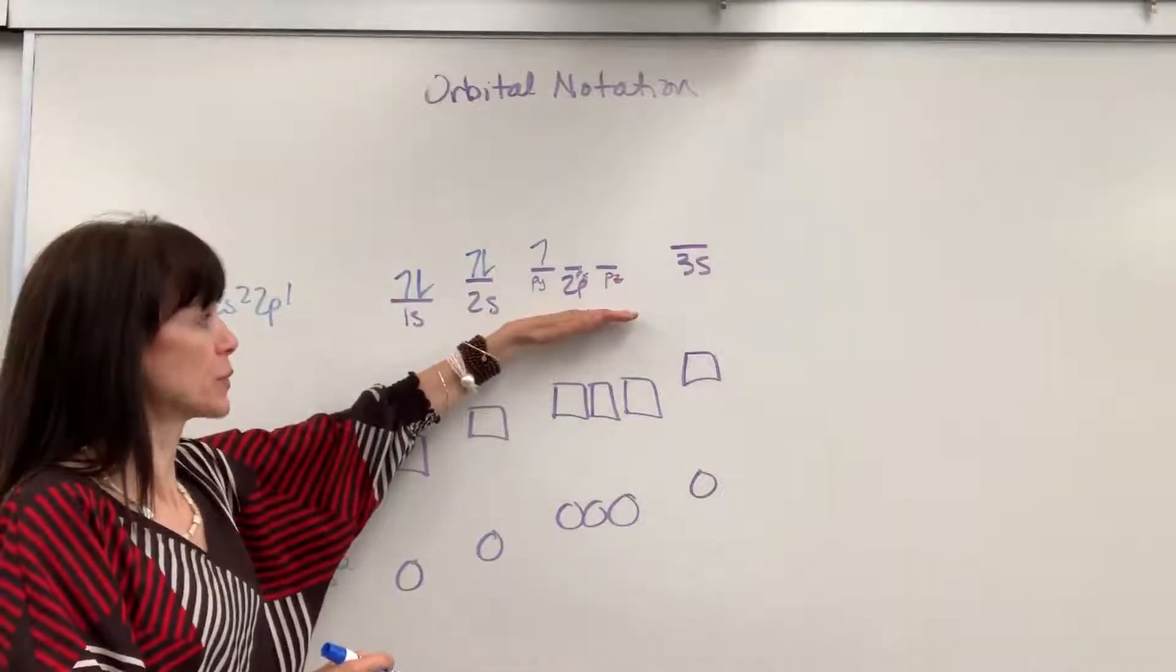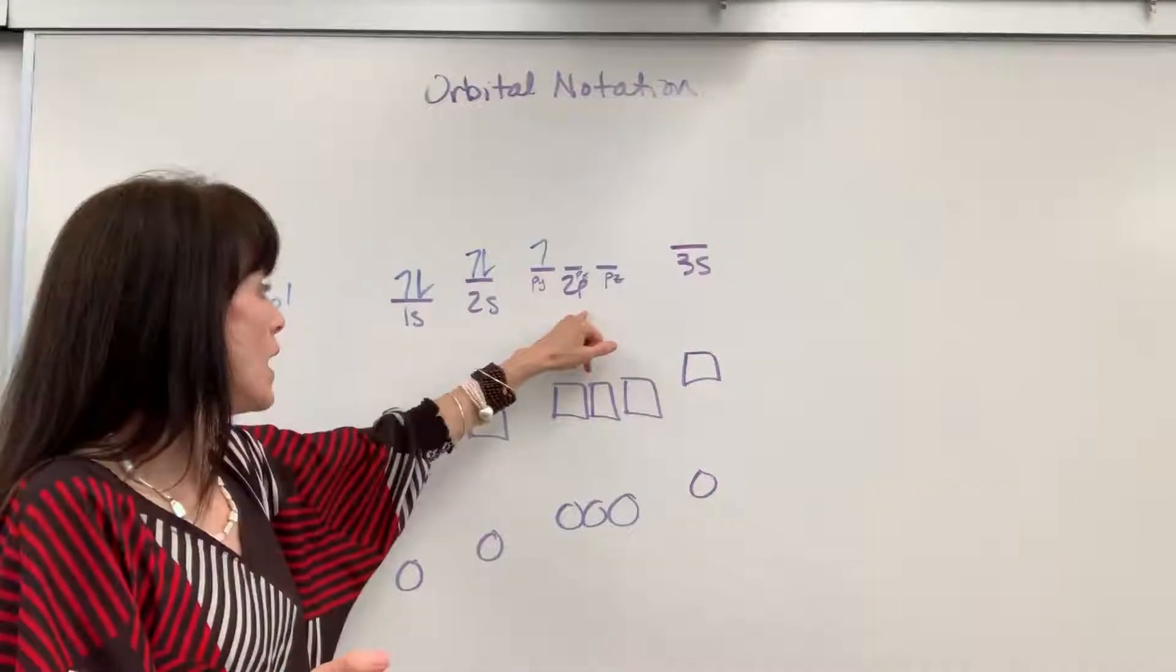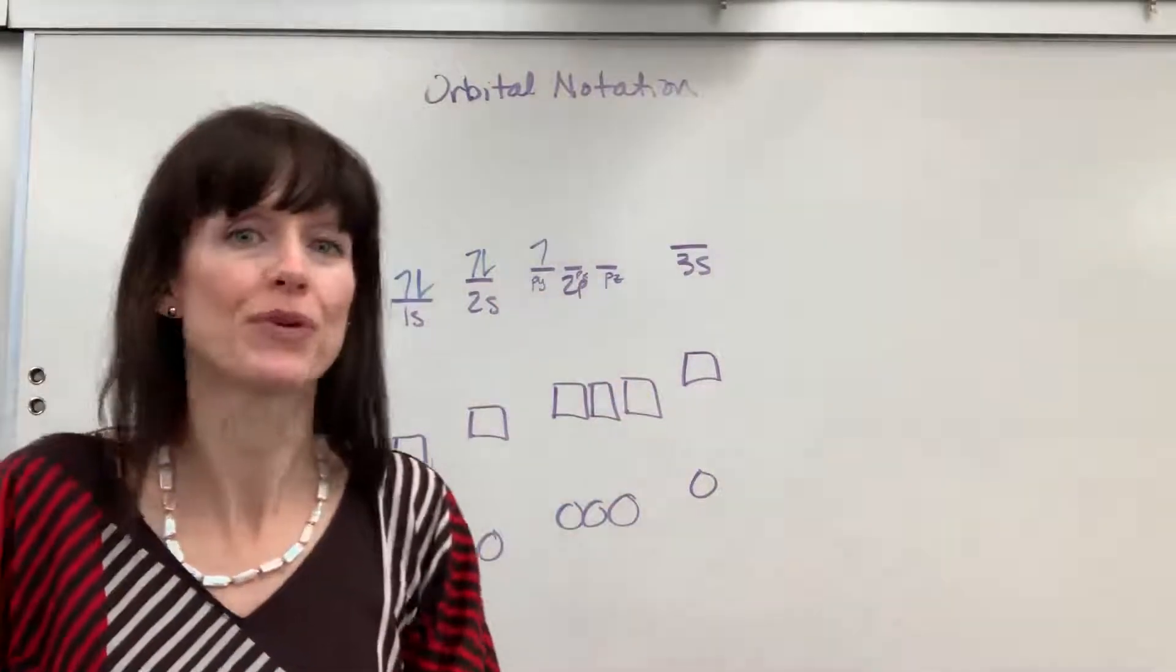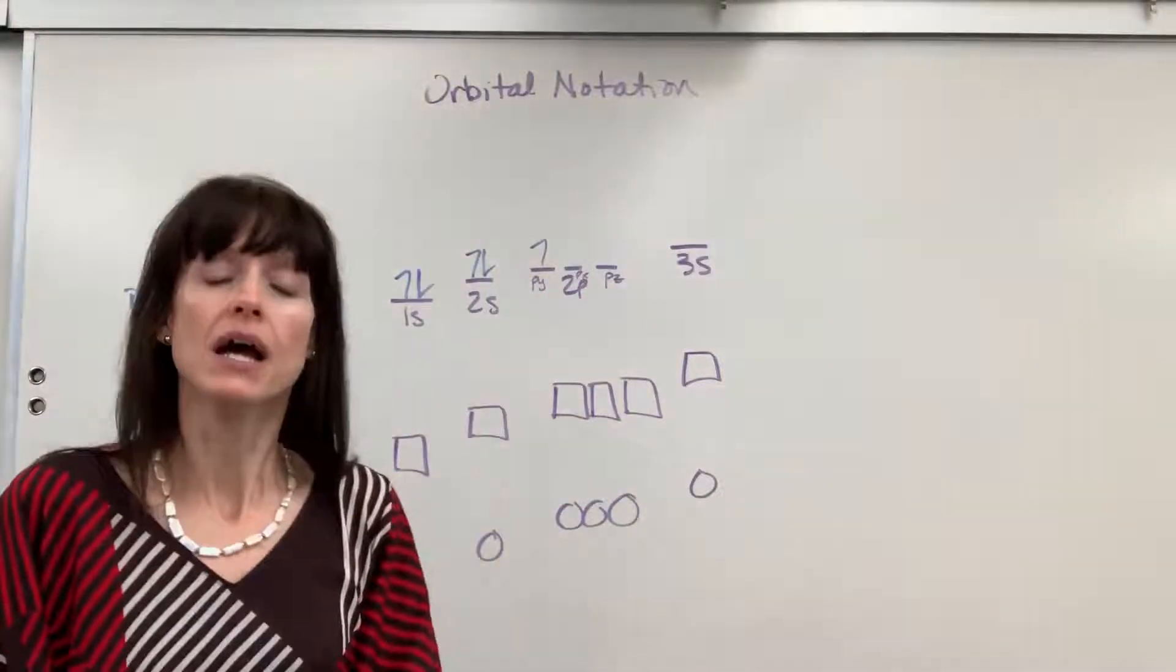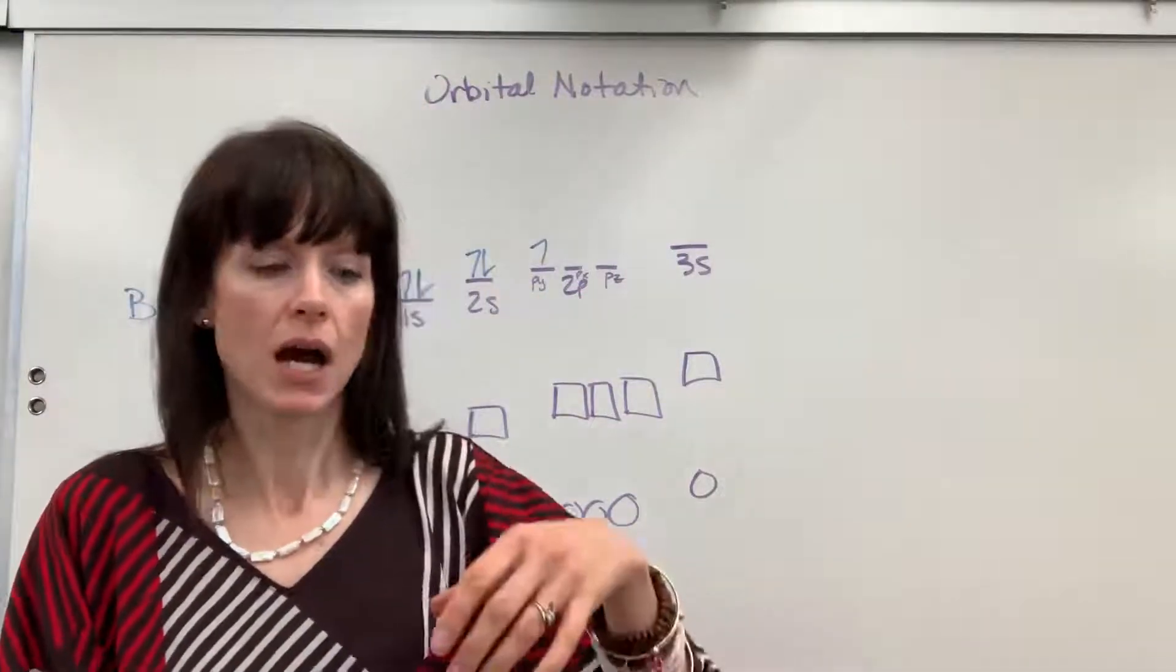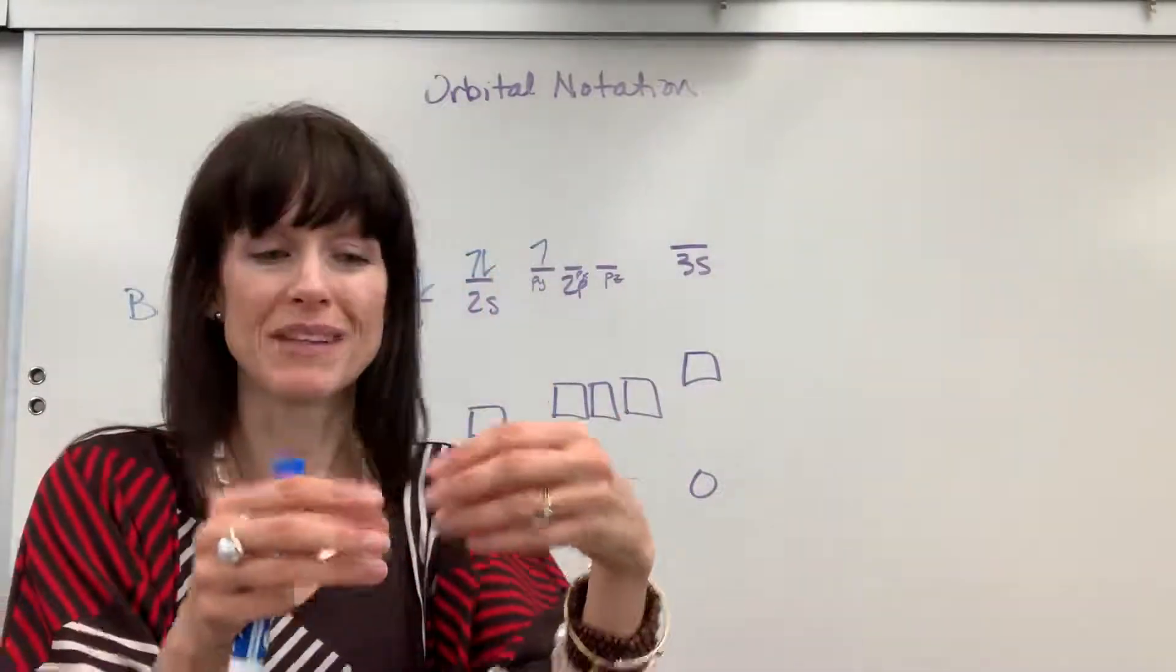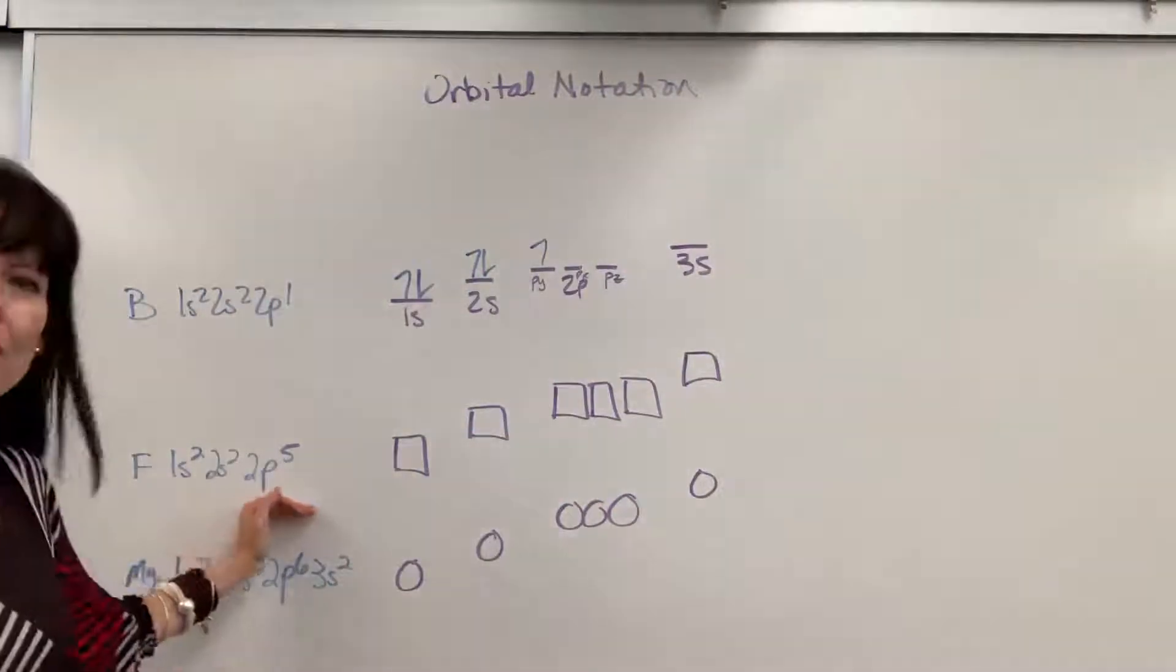Now sometimes when you're doing orbital notation, they'll not only have the energy level and the subshell, but they will also indicate different names for the orbitals. So this would be a p sub y, p sub x, p sub z, and that's just showing the axes, the orbital, the dumbbell, on the y axis, the z axis, and the x axis and the z axis. Okay, let's do another one.